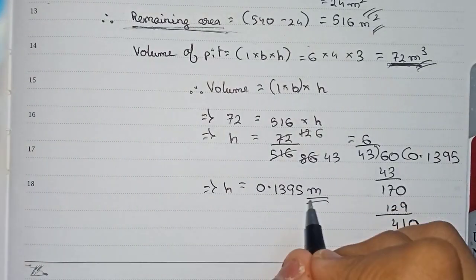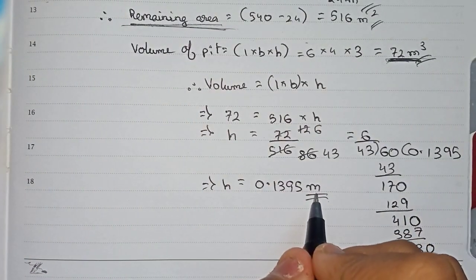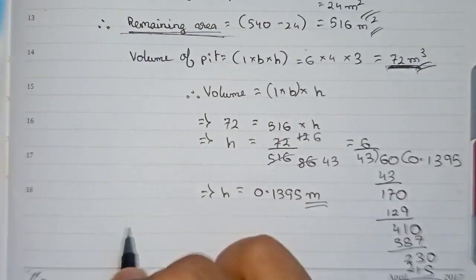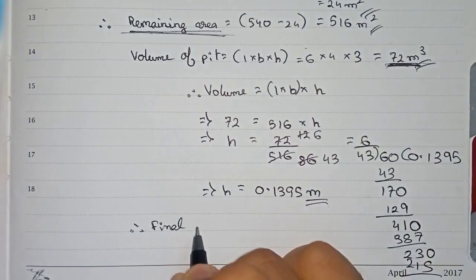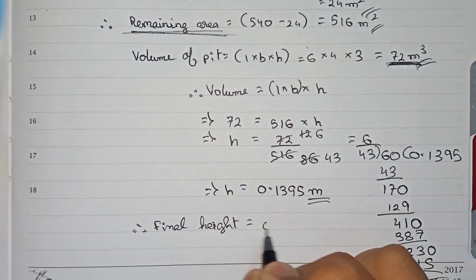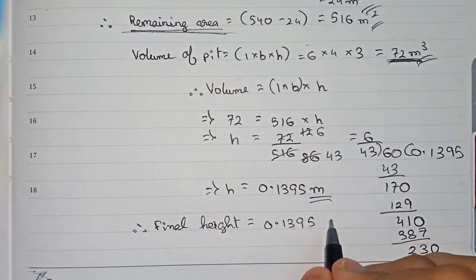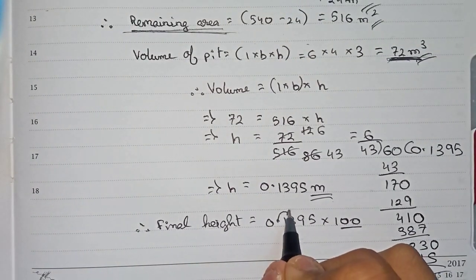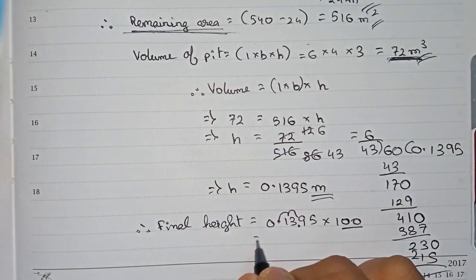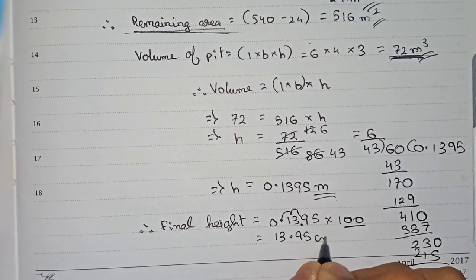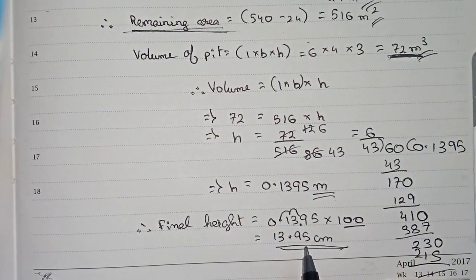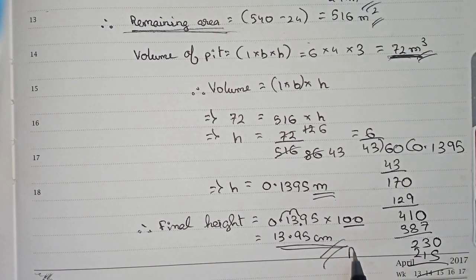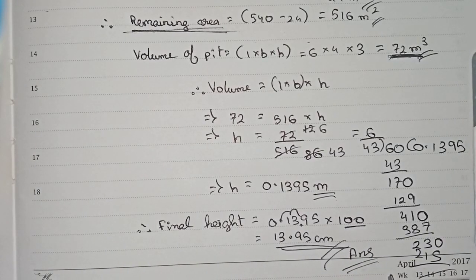Keep in mind we got the height in meters. The question asks for the answer in centimeters correct to two decimal places. So final height is 0.1395 meters. To convert to centimeters, multiply by 100 — the decimal shifts two places — giving 13.95 centimeters. We can see it is exactly two decimal places, so the final answer is 13.95 centimeters. Thanks for watching this video, please subscribe to my channel for more solutions like this.